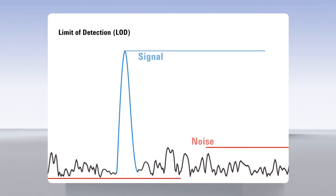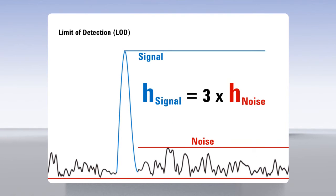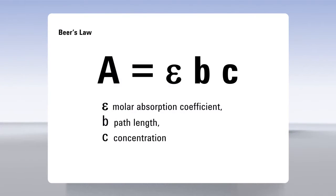Chromatographic sensitivity is expressed as the limit of detection, which is usually specified as a signal-to-noise ratio of 3 to 1. That means increasing the signal height and lowering detector noise leads to higher sensitivity. Beer's law tells us that signal height can be raised by lengthening the optical path.